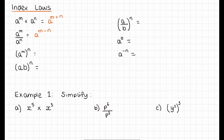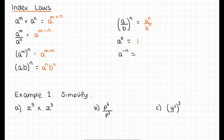Next, A to the power of M in brackets to the power of N — with this one we actually multiply our powers. Then A times B, all to the power of N: everything gets the power applied to it, so A has the power of N and B has the power of N too. The same applies if it's a fraction in the brackets, giving A to the power of N divided by B to the power of N. A to the power of 0 is 1 — just learn it, just know it. Anything to the power of 0 is 1 — a million to the power of 0 is 1. Then A to the power of negative N: we rewrite this as 1 over A to the power of N, making it a fraction and moving A to the power of N to the denominator.